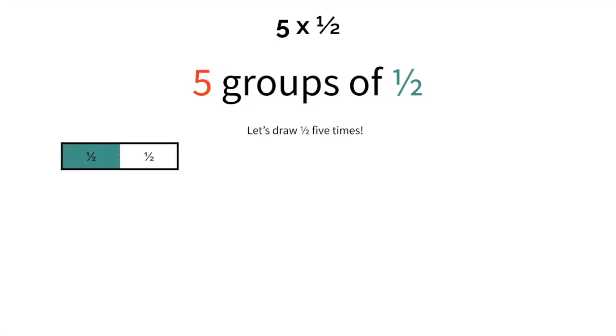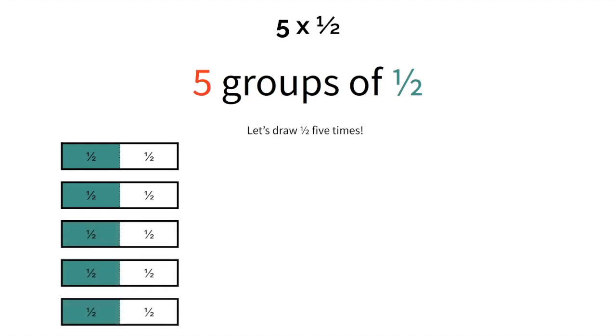Here's 1 group of 1 half, right? We need 5 of them. Here's another group, and then 5 groups. Oh yeah. Let's count all of these 1 half. Here's 1 half right here. Here's another half, that's 2 halves. Here's another half, that's 3 halves, 4 halves, 5 halves. We have a total of 5 halves. 5 times 1 half equals 5 halves.